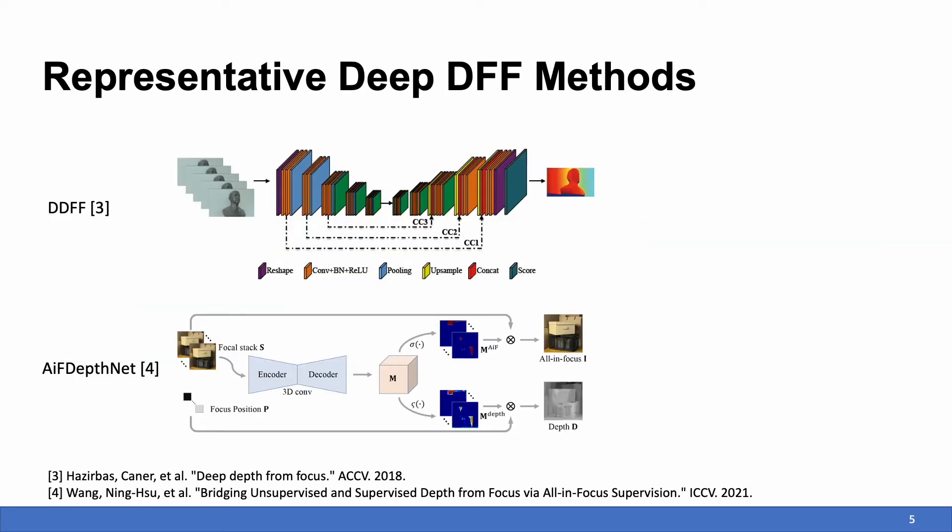Some works try to solve this problem by using deep learning like DDFF and AIF DepthNet. However, the existing deep methods usually adopt the network from other applications and ask the network to directly regress the depth value. Thanks to the learned features, they are sort of robust but not very accurate because they do not really utilize the specialty of DFF.